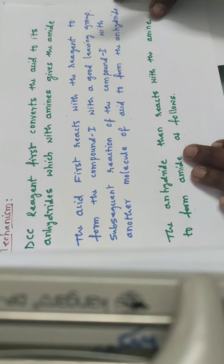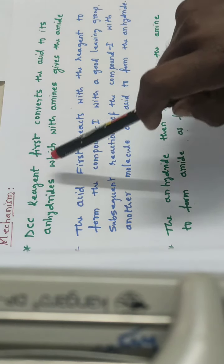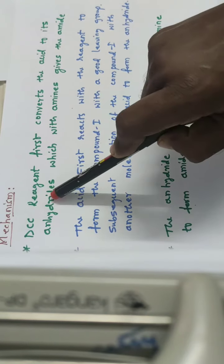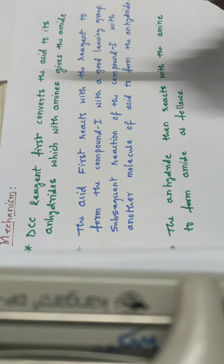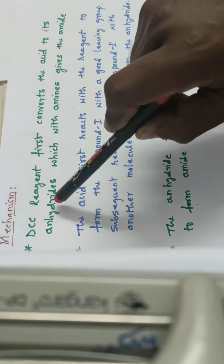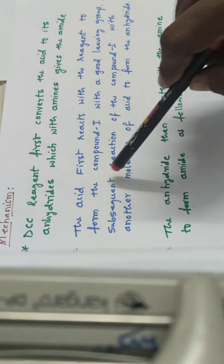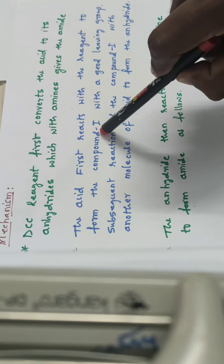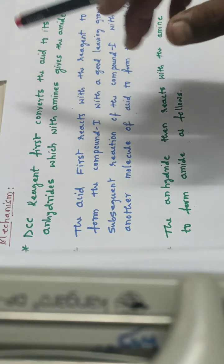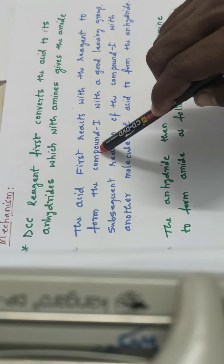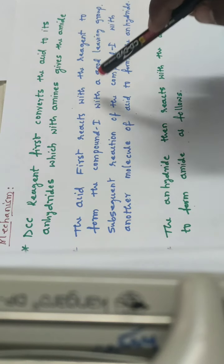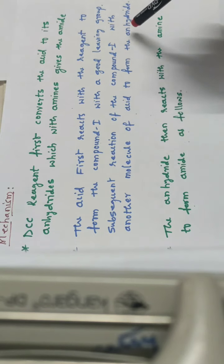Now we can see the mechanism. First, the DCC reagent converts the carboxylic acid molecule into an anhydride. That anhydride, after reacting with amines, gives the amide. The acid first reacts with the reagent to form compound 1 — an intermediate product. This compound 1 is formed by the joining of the carboxylic acid molecule with the DCC reagent, giving a complex molecule. Compound 1 has a good leaving group, and after reacting with a second molecule of carboxylic acid, it gives the anhydride.